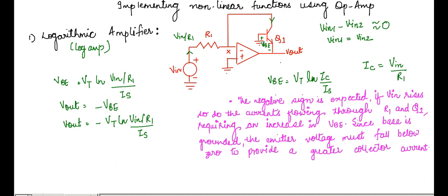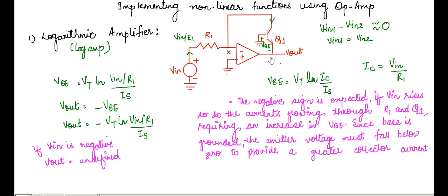Now, what happens if V in becomes negative? By putting it into the formula, we can see that if V in is negative, we cannot predict V out — V out will be undefined if V in is negative. Hence, in the actual circuit, if V in is negative and Q1 cannot carry a negative current, this loop around the operational amplifier is broken and V out approaches the negative supply rails. Therefore, it is necessary to ensure that V in remains positive.